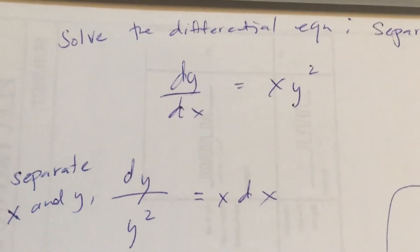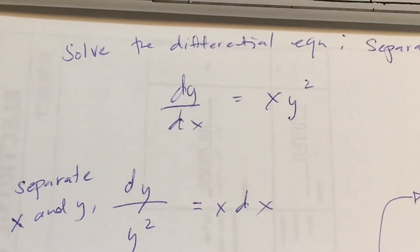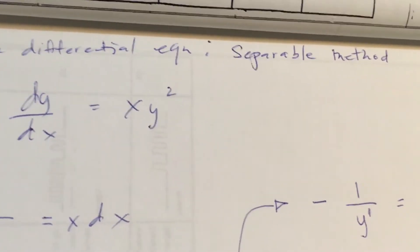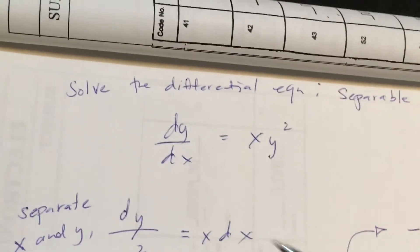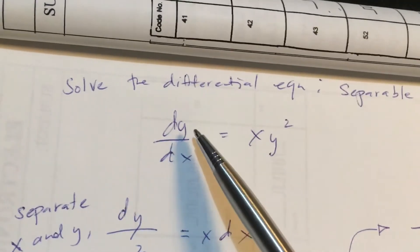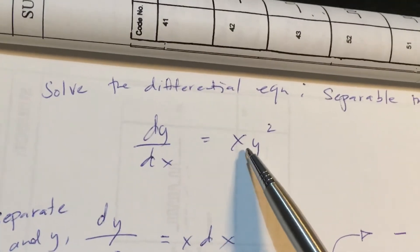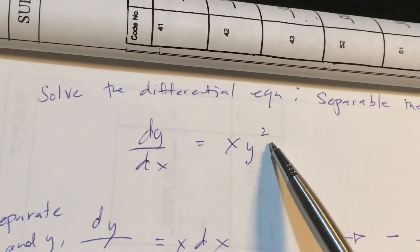In this video, I'm going to show you how to solve this differential equation by using a separable method. We have given dy over dx is equal to x times y raised to the second power.